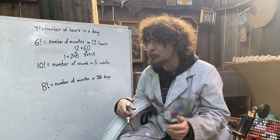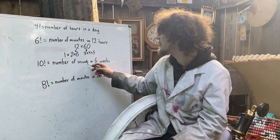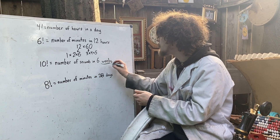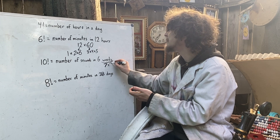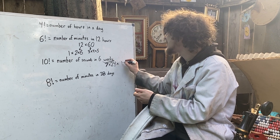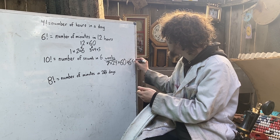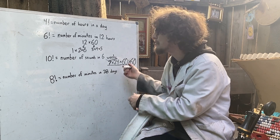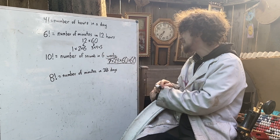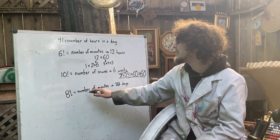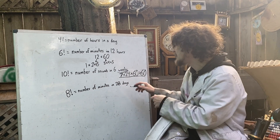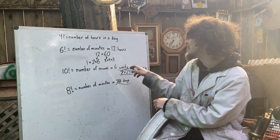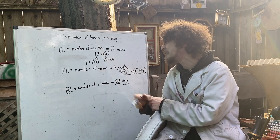Ten factorial is the exact number of seconds in 6 weeks — because each week is 7 days, each day is 24 hours, each hour is 60 minutes, each minute is 60 seconds, and there's a way to rewrite all that as 1 times 2 times 3 all the way through times 10. And 8 factorial is the exact number of minutes in 28 days — the number of minutes February usually has.